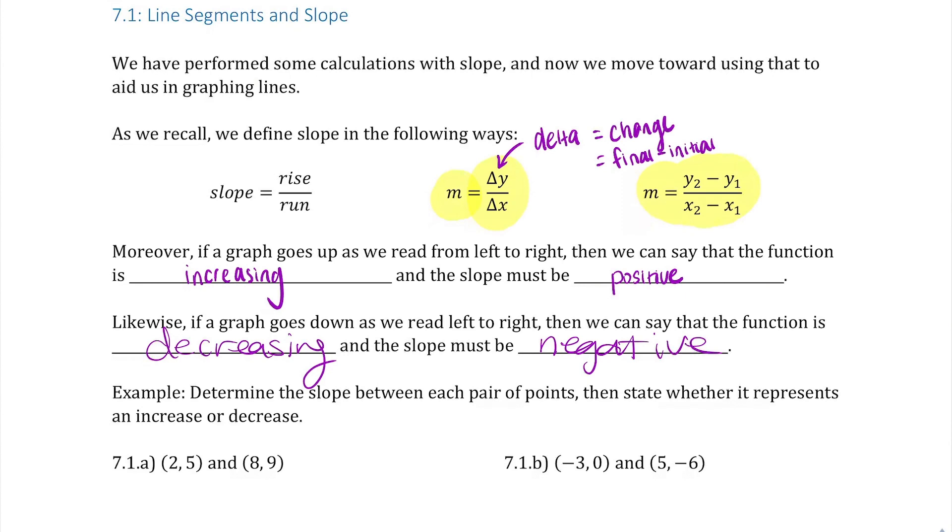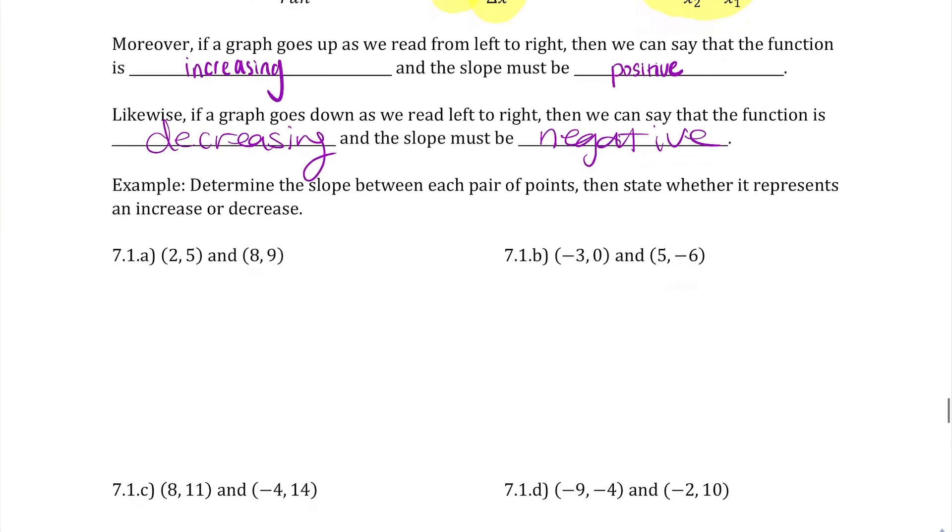In the next couple examples, four to be exact, we're going to look at finding the slope between each pair of points, then stating whether that slope represents an increase or a decrease. For this process, remember that you can always use either point as x1, y1, and the other as x2, y2, as long as you're consistent and don't choose one value to be x1 and the other one to be y2.